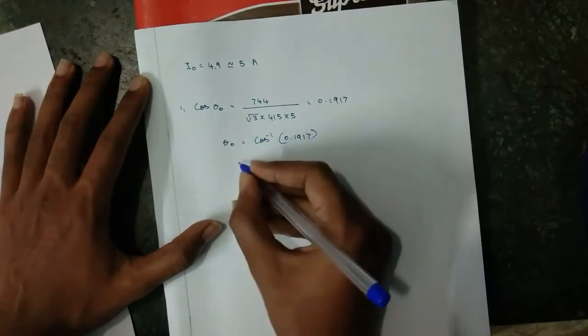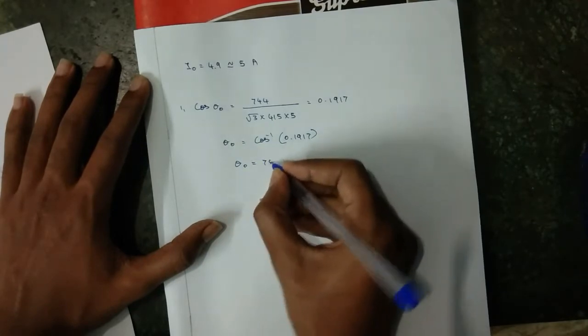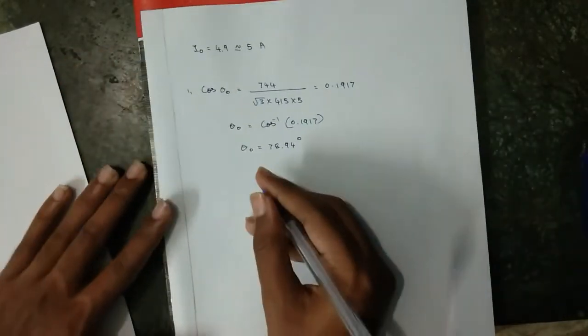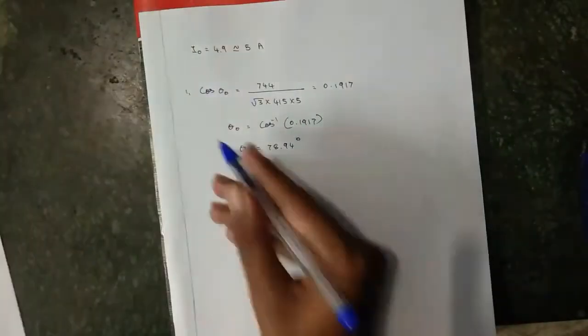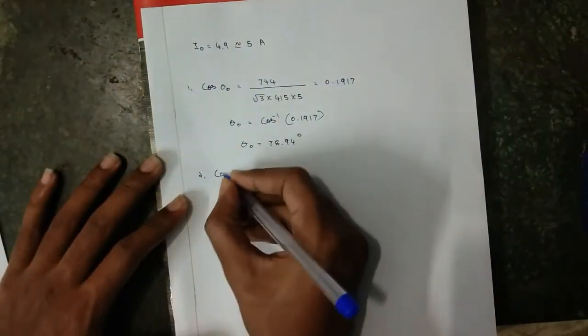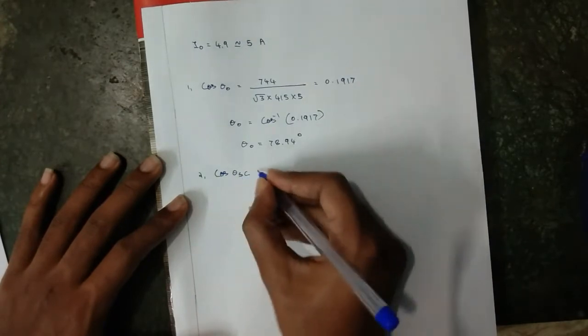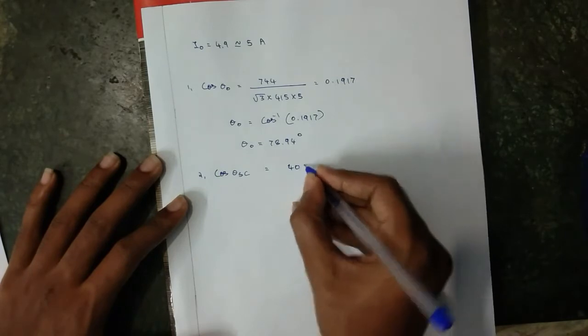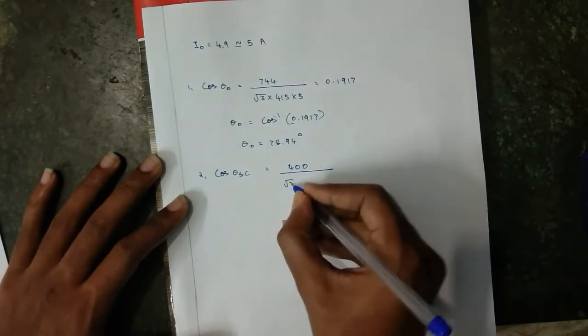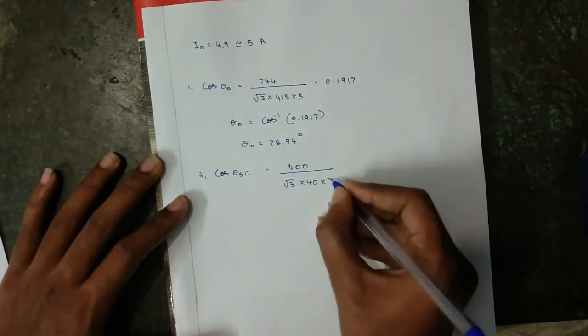Theta_not equals 78.94 degrees. Then for short circuit, the power factor is cos theta_sc equal to 400 by root 3 into 40, for a short circuit. The power factor is 0.3079.